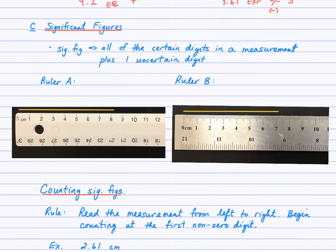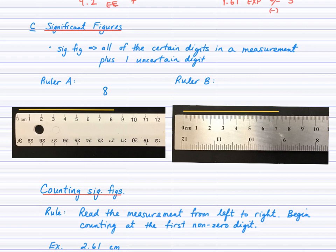I'll show you what I mean with ruler A and ruler B. Both are measuring in centimeters. I've drawn a yellow line, and using ruler A to measure its length — hopefully you're feeling confident that it's at least 8 centimeters but not up to 9 yet. You're certain of the 8, and now you can estimate the next digit — perhaps 8.2. So we would say 8.2 centimeters. This ruler has given us a measurement to the nearest tenth of a centimeter.